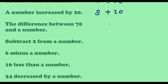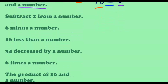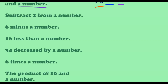Next, we have 'the difference between 70 and a number.' We have the word difference, so we use the subtraction sign. We write 70 before the subtraction sign and a number after it. Let us use the variable x. So the difference between 70 and a number is 70 minus x. Next, 'subtract 2 from a number' — let's use variable y. From y, we subtract 2, giving us y minus 2.